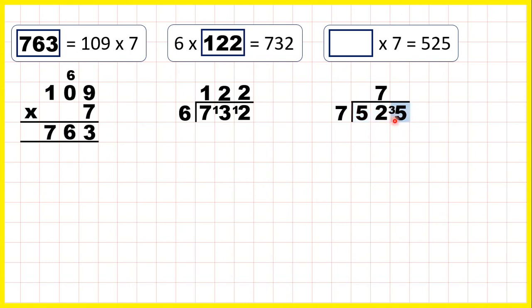Now 35 divided by 7 is 5, because 5 times 7 is exactly 35, so our missing number is 75.